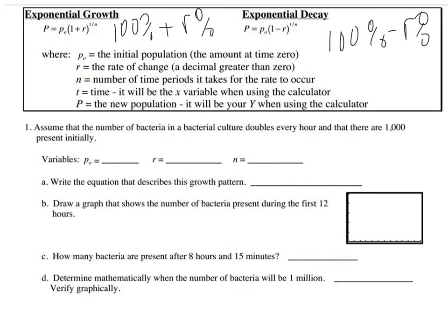For the first question, the number of bacteria doubles every hour. So if it's doubling every hour, that means it's twice as big. If I have a thousand at time zero, at time one I'm going to have two thousand. What's our growth rate here? We're trying to do it consistently so we don't have to think too hard.